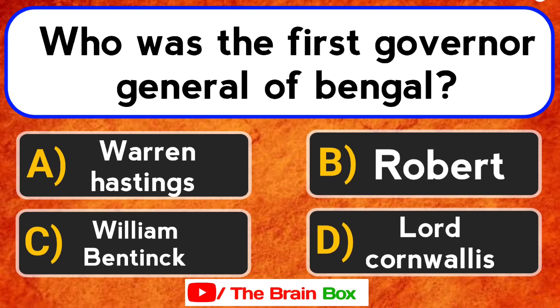Who was the first Governor General of Bengal? Your options are: Option A, Warren Hastings. Option B, Robert. Option C, Warren Hastings. Option D, Lord Cornwallis.